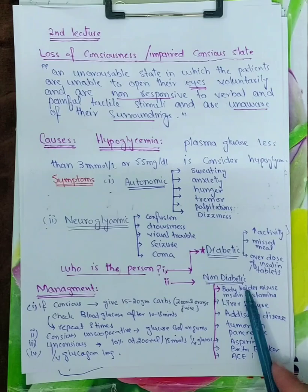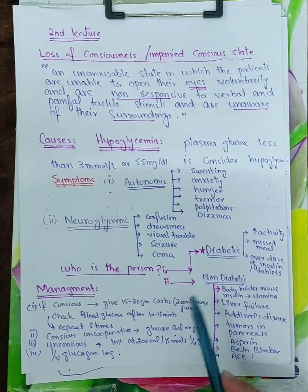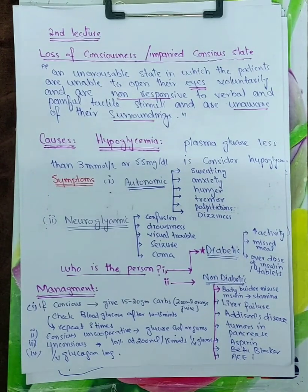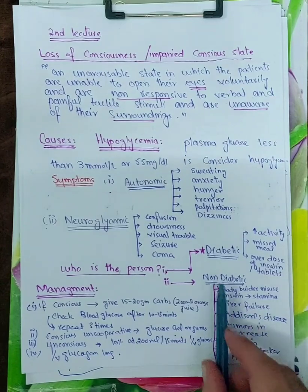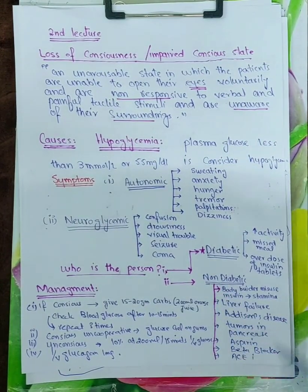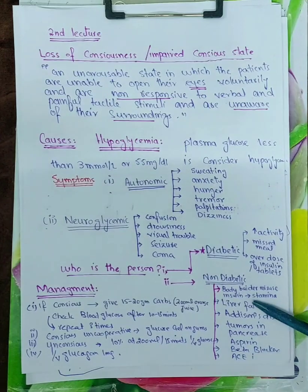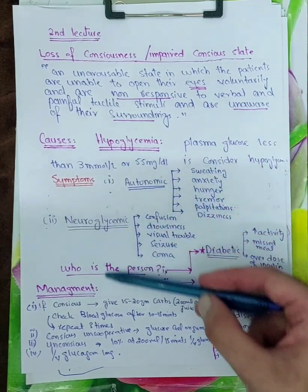Now the non-diabetic patients which lead to hypoglycemic state - the first one is bodybuilders who go to gym and want to make their body. They use insulin for their stamina. So while using insulin, they are misusing it, and they go into the state of hypoglycemia and present with these symptoms.